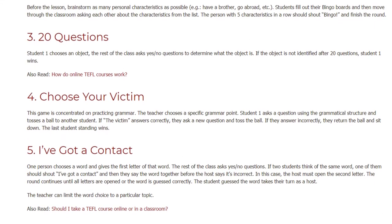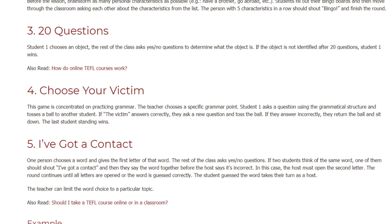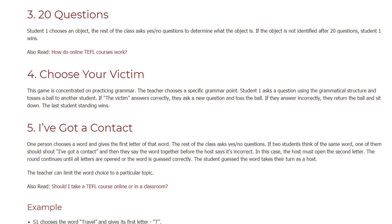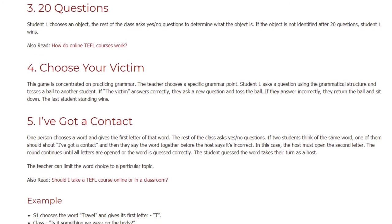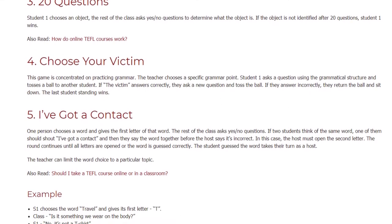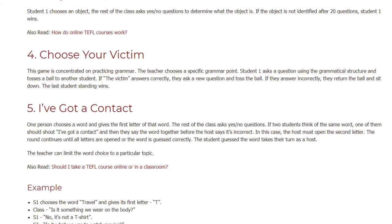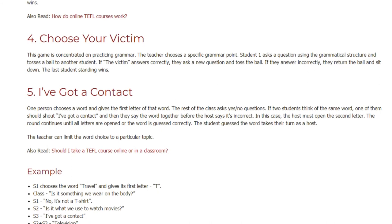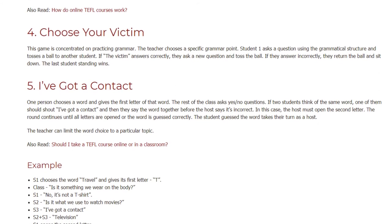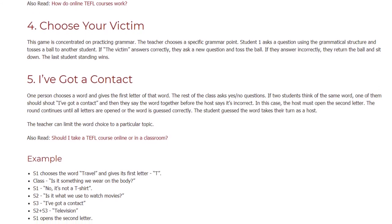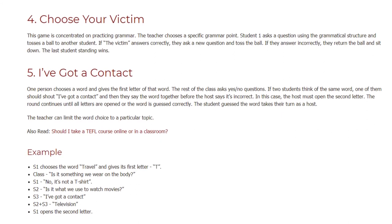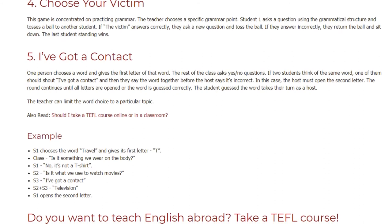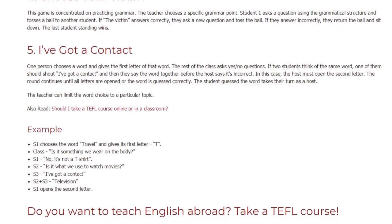Game 5: I've Got a Contact. One person chooses a word and gives the first letter of that word. The rest of the class asks yes or no questions. If two students think of the same word, one of them shouts 'I've got a contact,' and then they say the word together. If the host cannot say it's incorrect, the host must reveal the second letter. The round continues until all letters are opened or the word is guessed correctly. The student who guesses the word takes their turn as host. The teacher can limit word choices to a particular topic.